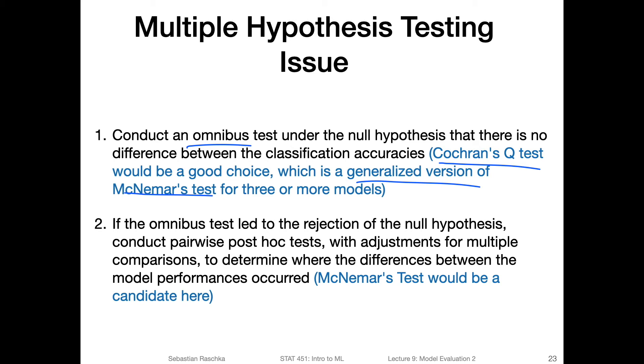So once we did the omnibus test, if we fail to reject the null hypothesis that all accuracies are equal, then we are done, we stop. Otherwise, if we reject the null hypothesis that all accuracies are equal, we continue with the pairwise post hoc tests, but we do the adjustments.